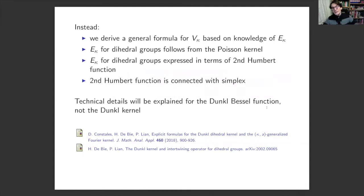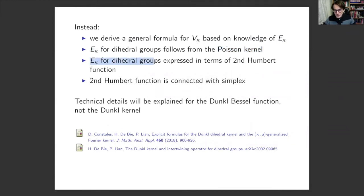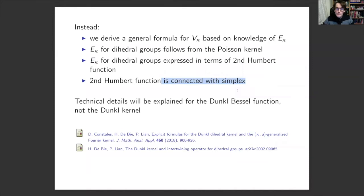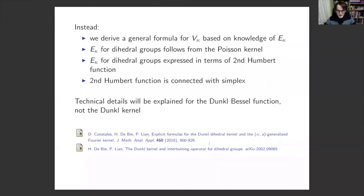Our approach: we derive a general formula for V_kappa based on knowledge of E_kappa. Then we determine the Dunkl kernel for dihedral groups, which follows from knowledge of the Poisson kernel. We express this Dunkl kernel in terms of the second Humbert function — a hypergeometric function of Loricella type — which curiously can be expressed as an integral over the simplex, explaining where Xu's result comes from. These are the two papers where our results appear; I recommend reading the second paper, where the simplex representation first appears.